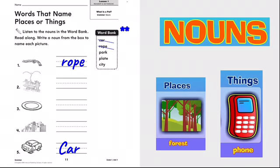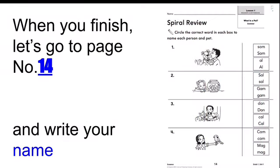And the last one to write down. Number five. City. City. Do you see a city? Yes? Okay. Write next to it. Write the word city. Very good. When you finish, let's go to page number fourteen. And write your name.